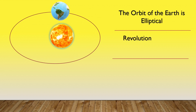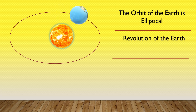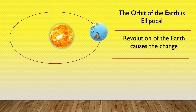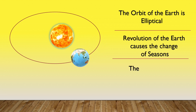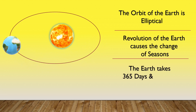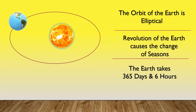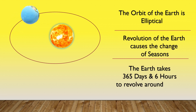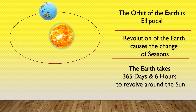Revolution of the Earth causes the change of seasons. For one revolution, Earth takes 365 days and 6 hours to revolve around the Sun.